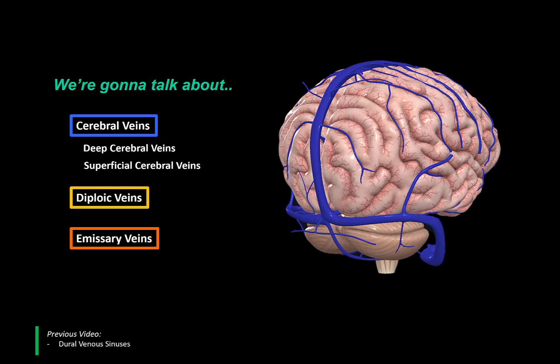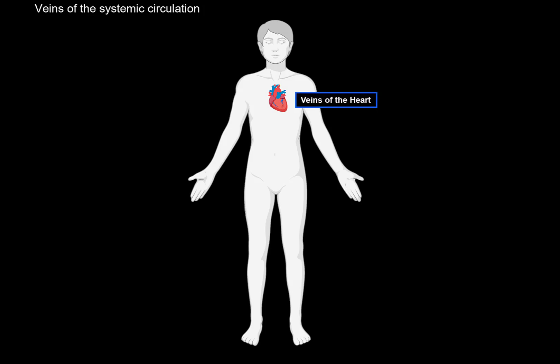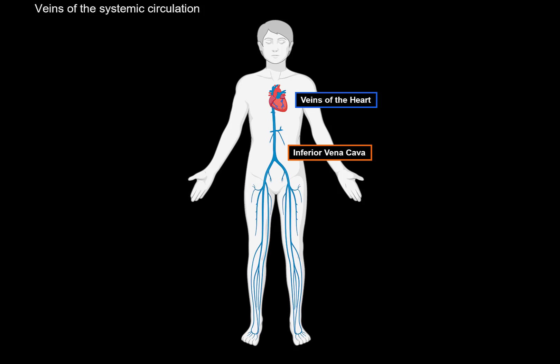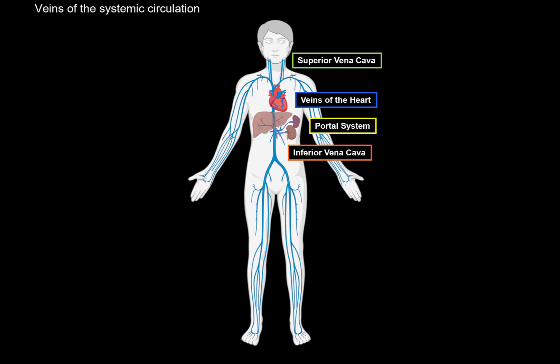In the previous video, we talked about the dural sinuses, so if that topic is unfamiliar to you, I'll put a link to a playlist that covers the venous drainage of different parts of the body. The easiest way to understand the veins of the systemic circulation is to divide them into their own systems. The veins of the heart form their own system. We have the veins of the inferior vena cava, responsible for the lower half of the body, the superior vena cava for the upper half, and the portal system. The cerebral veins are part of the superior vena cava, because they drain into it eventually.